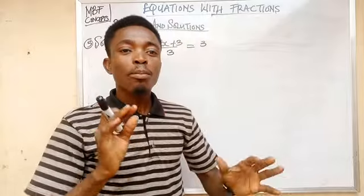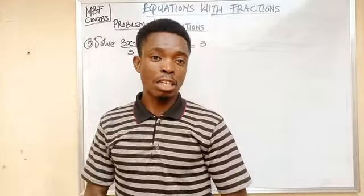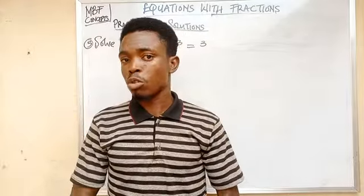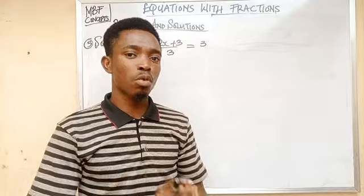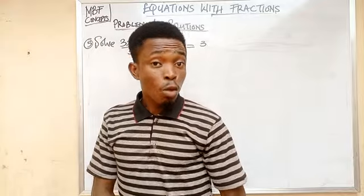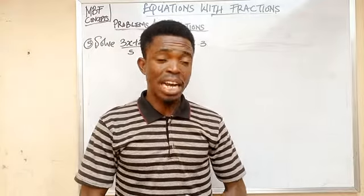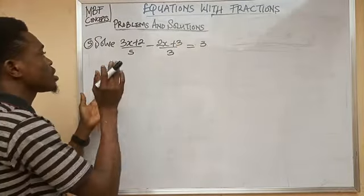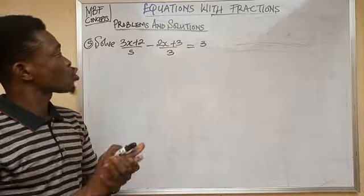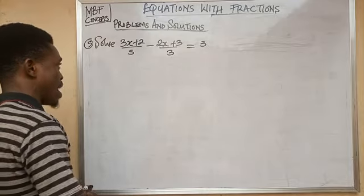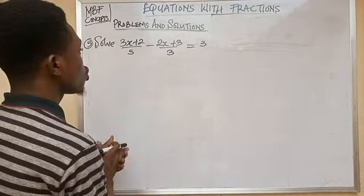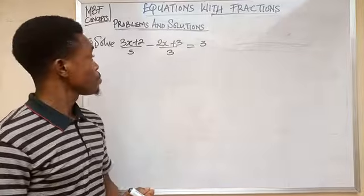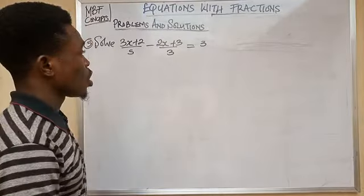We are still solving problems under equations with fractions. This is question number 5. We are asked to solve: 3x plus 2 over 5, minus 2x plus 3 over 3, is equal to 3.